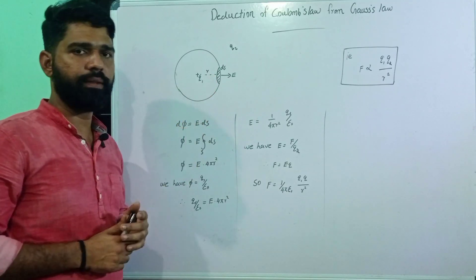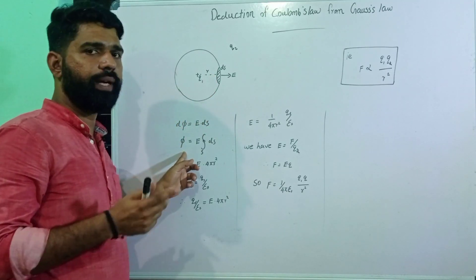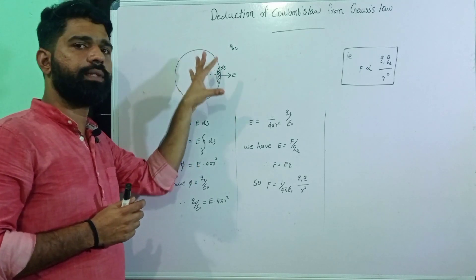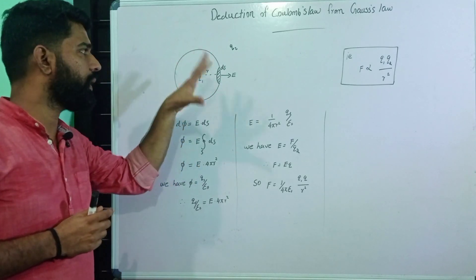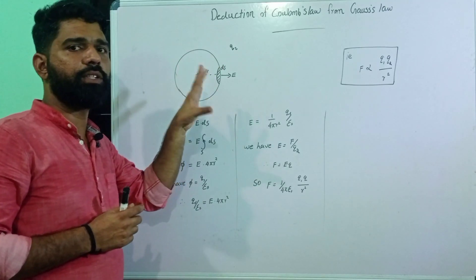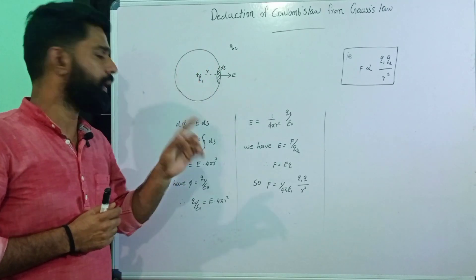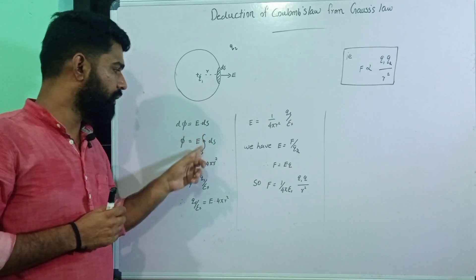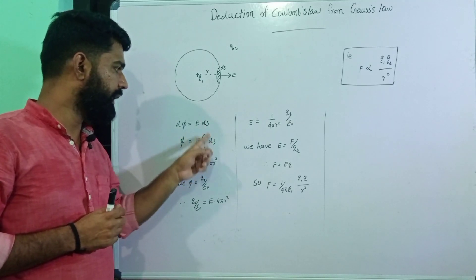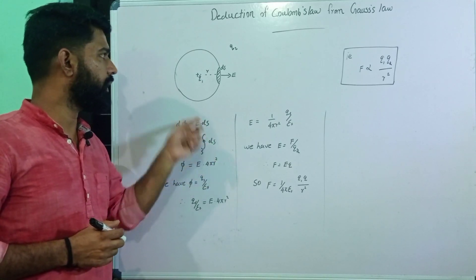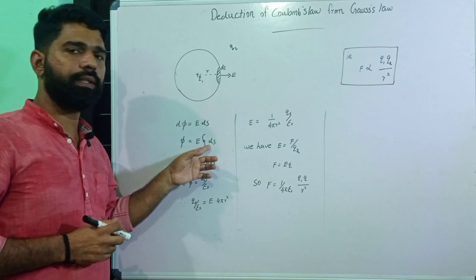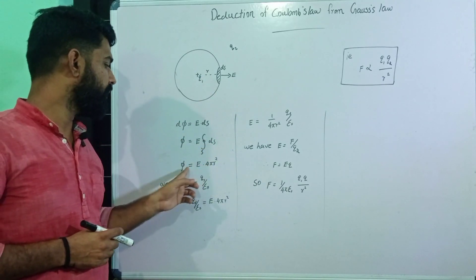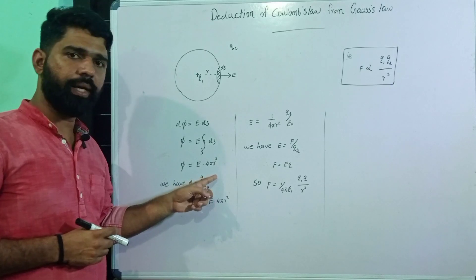The small surface flux dΦ is equal to E·ds, then the total flux Φ is equal to the surface integral of E·ds. Considering the total surface area of a sphere, the total surface is equal to 4πr², so Φ is equal to E times 4πr².